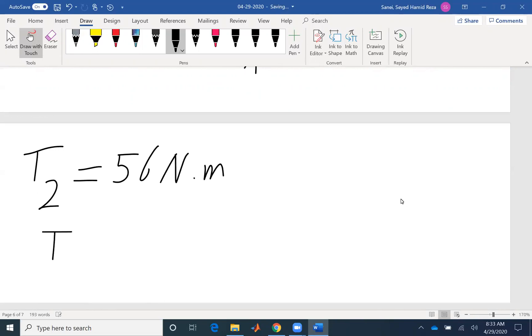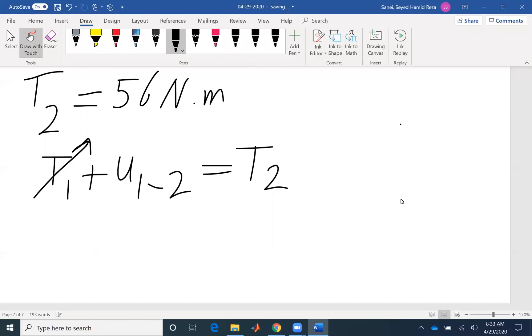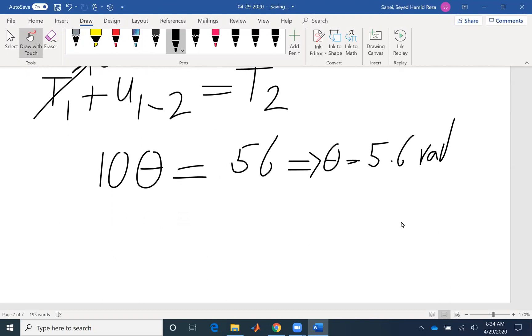And if I use my equation again, T1 to work and energy, U1 is 0. U12 was the work of the moment, which was 10 times theta. And the final kinetic energy was 56. Therefore, theta is 5.6. Remember, that would give us the radians. The problem is asking for revolution. I'm going to change radians to revolution.